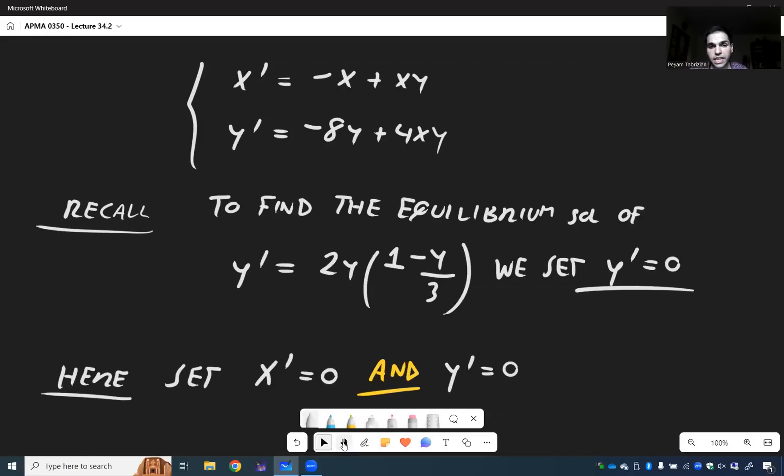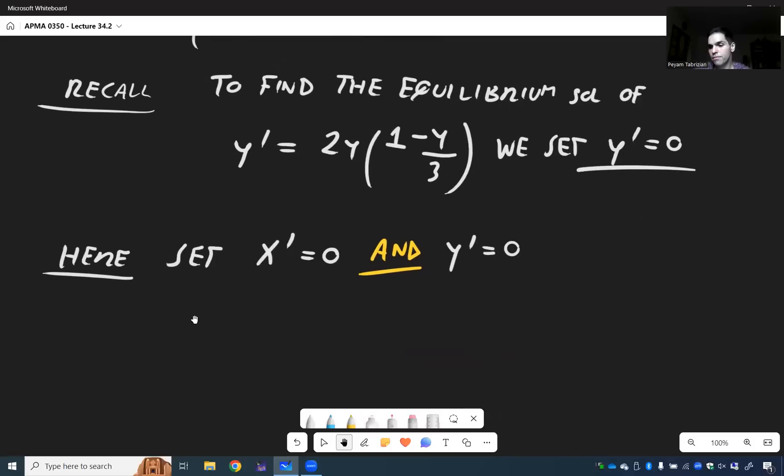Which, in this case, if you set x prime and y prime is 0, then you get a system of two equations: minus x plus xy equals 0 and minus 8y plus 4xy equals 0. And careful, don't divide by x and y just yet, because you might miss on 0 solutions.